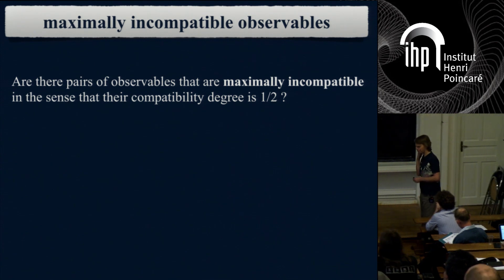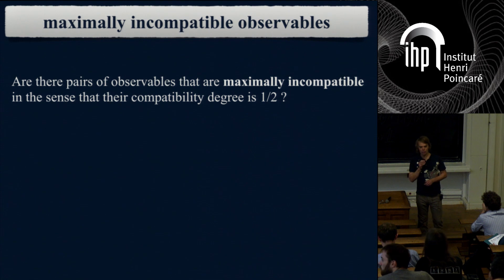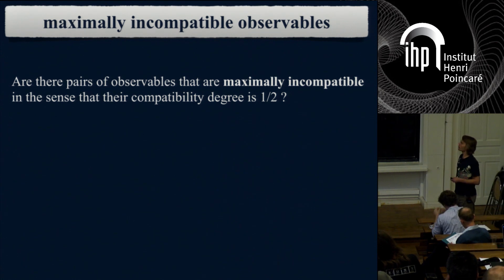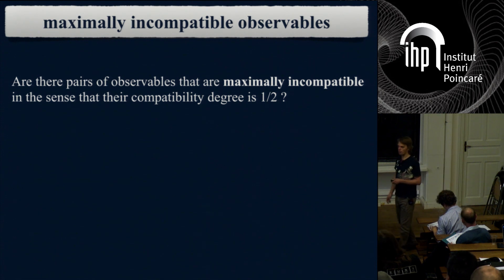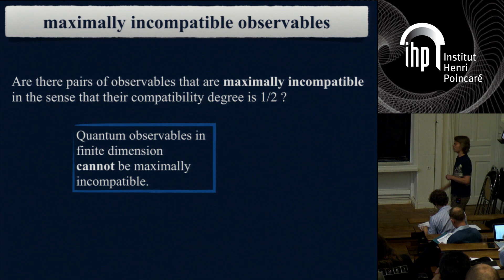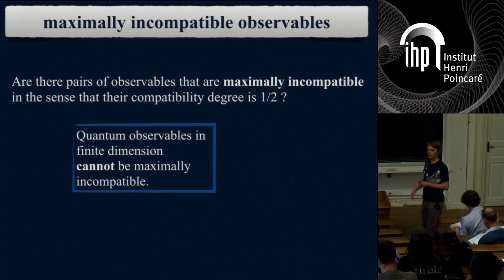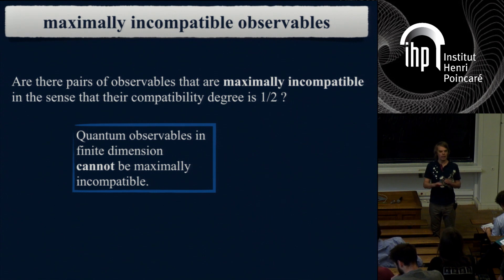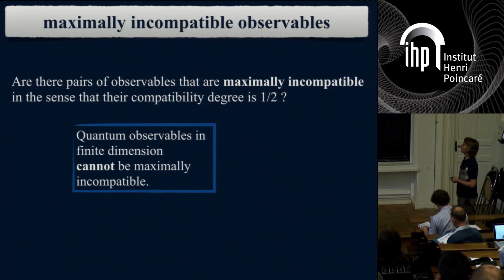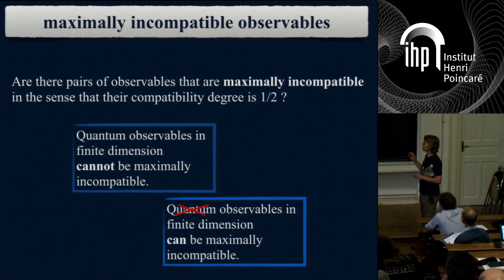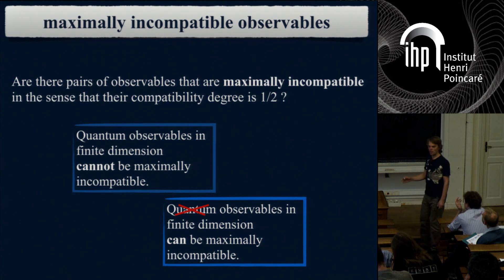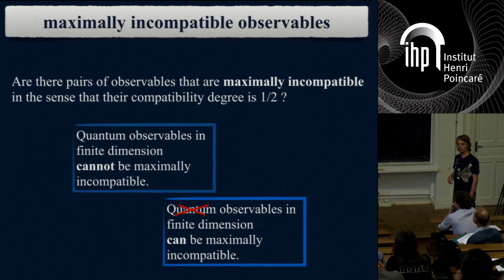Now we come to the title of my talk: maximally incompatible observables. The question is whether one-half is achievable as a compatibility degree. Do pairs of observables exist with compatibility degree exactly one-half? They would be interesting creatures. I repeat: they cannot exist in finite dimension—not with any number of outcomes—because the approximate cloning argument gives you that lower bound regardless of the number of outcomes.